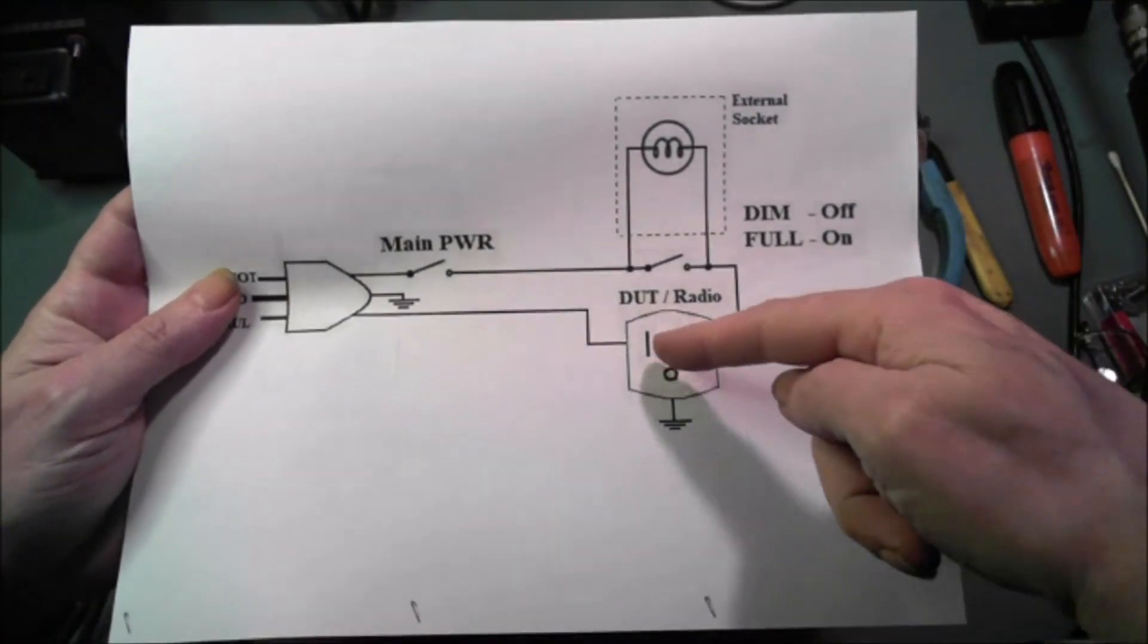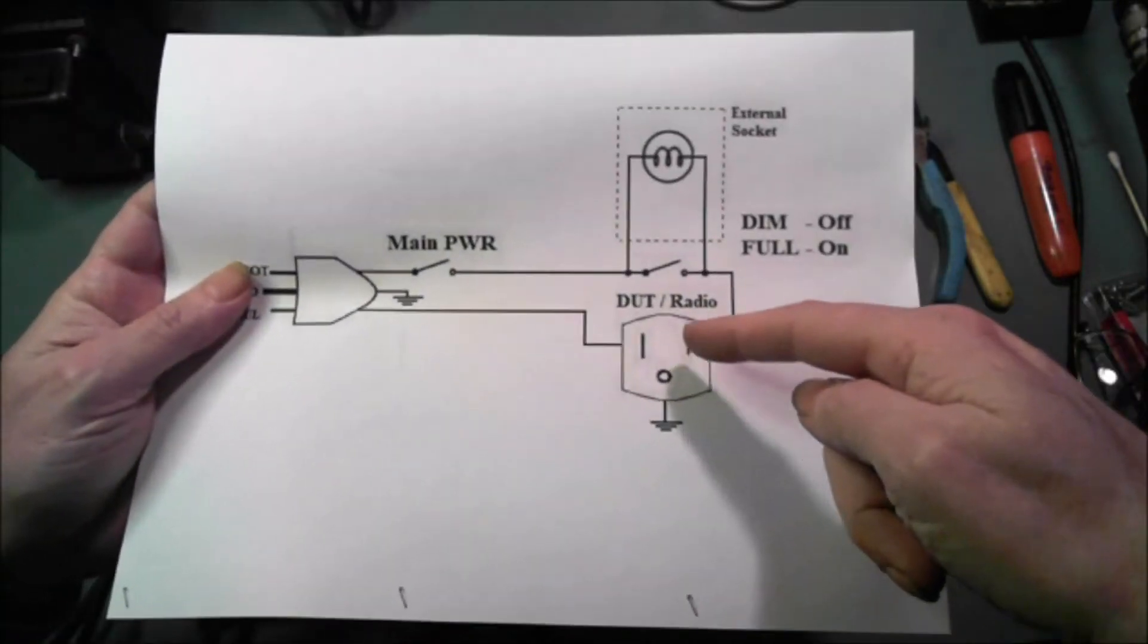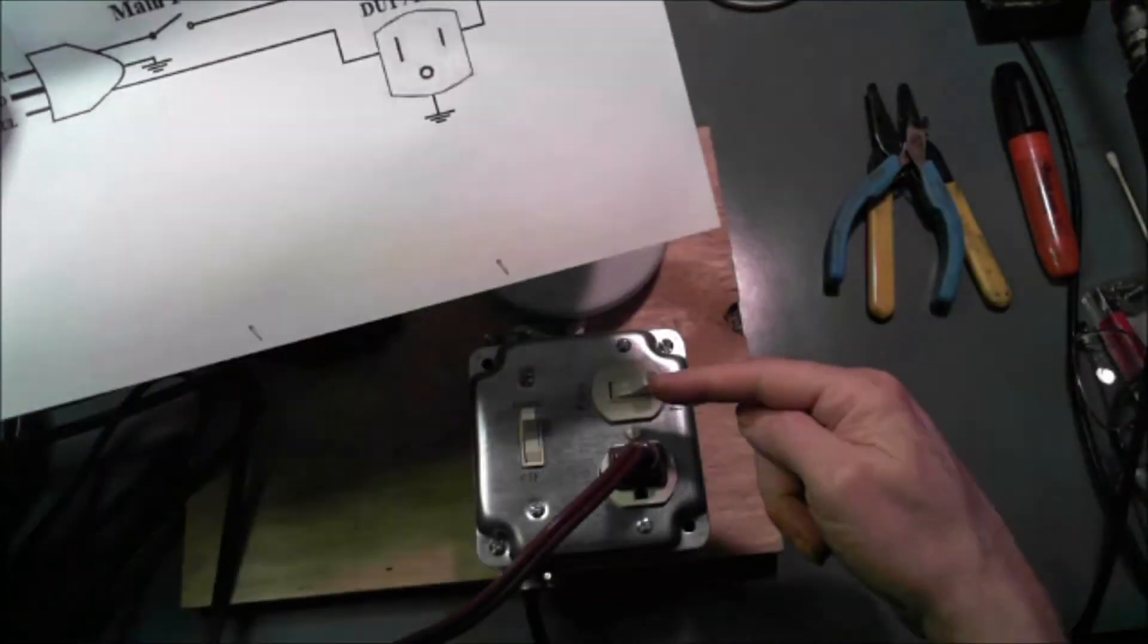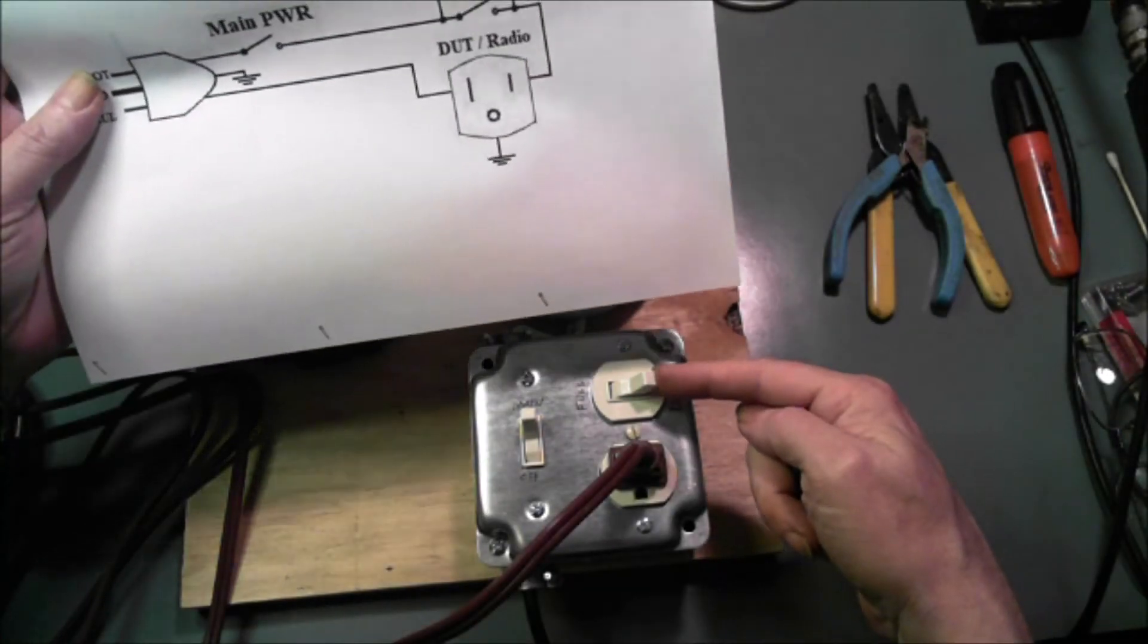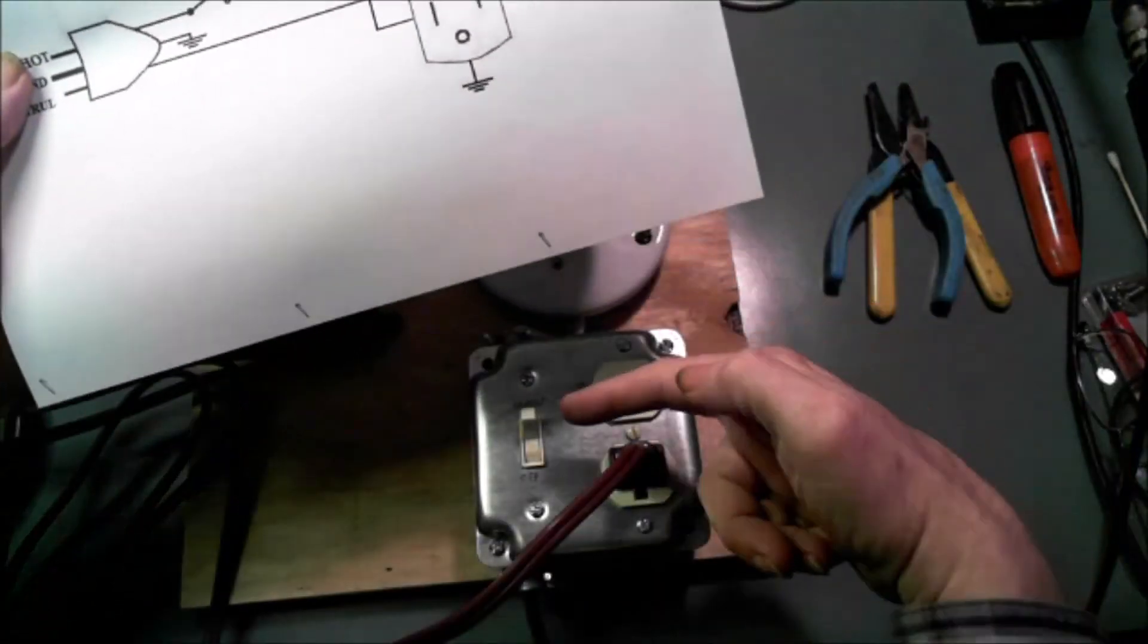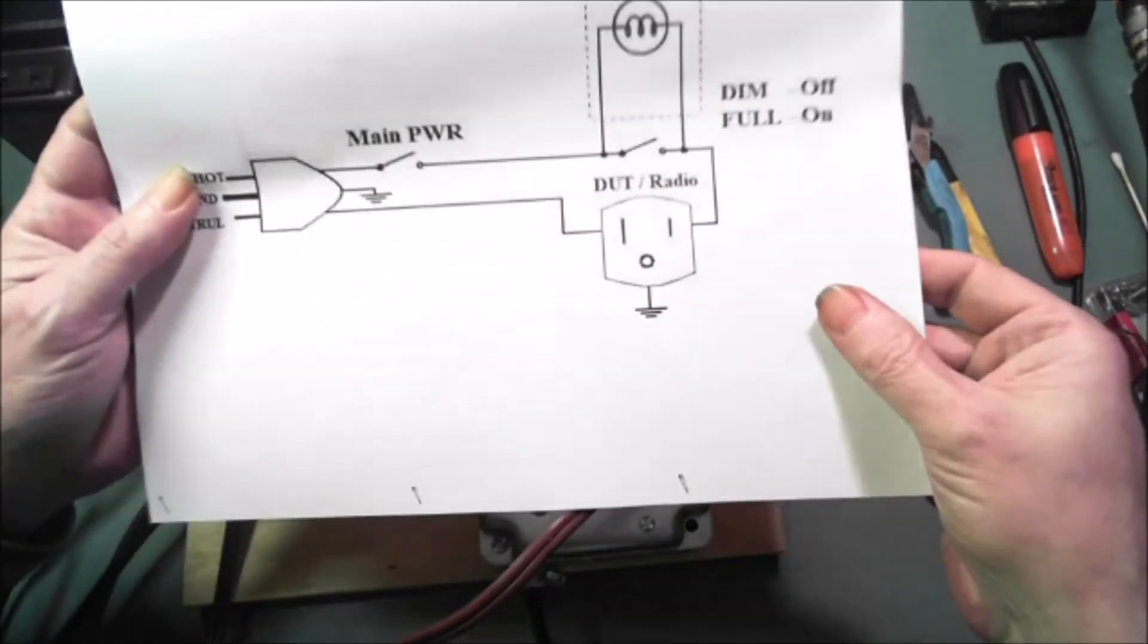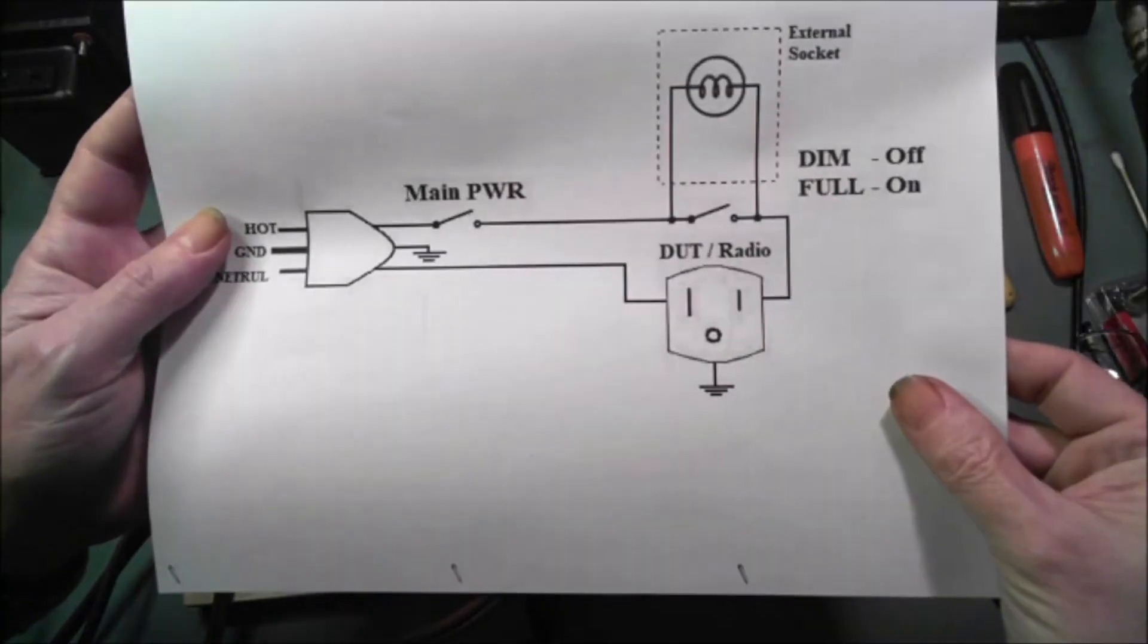This is where the plug is right here, the device under test, light bulb right here. This switch is this switch right here. Main power comes in through this cord right here and to this switch right here. And that's the whole circuit.